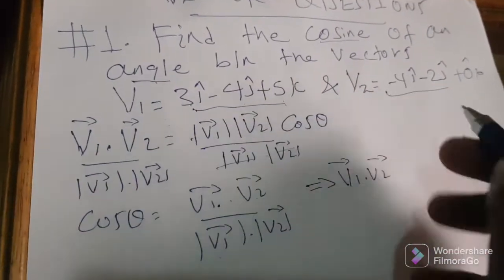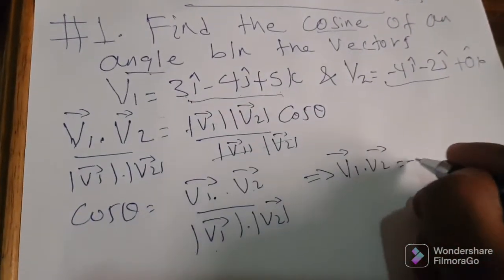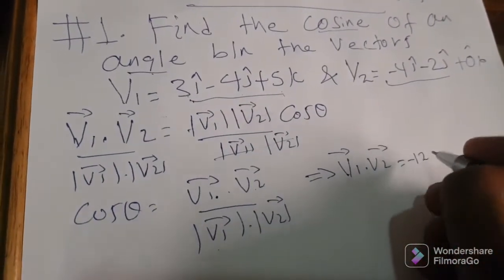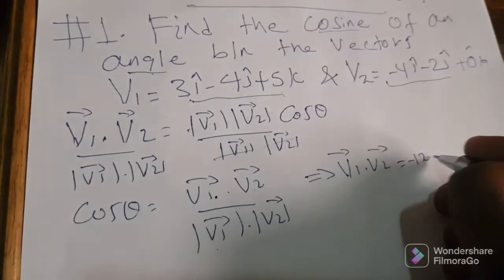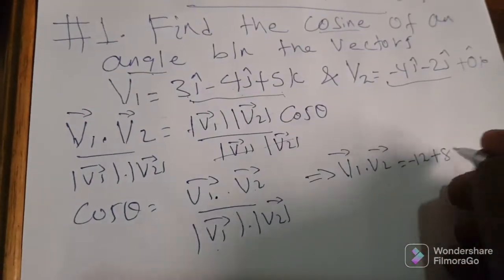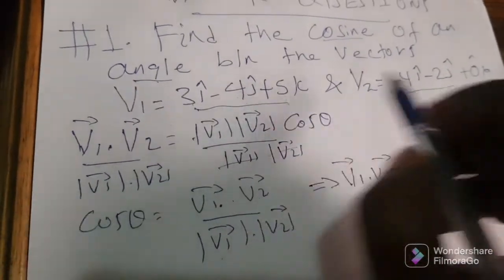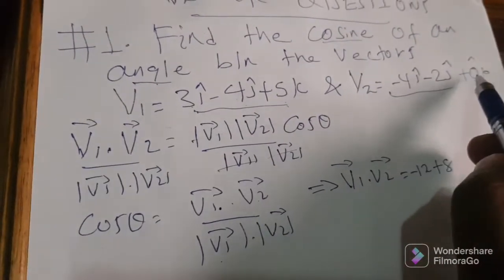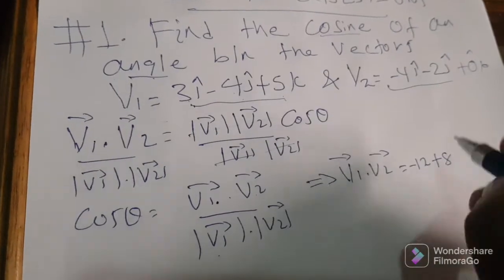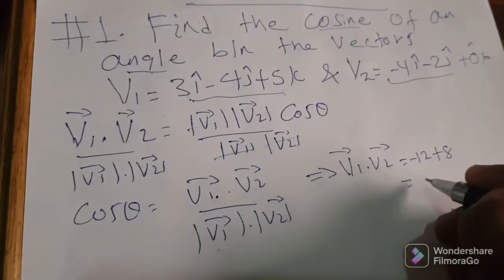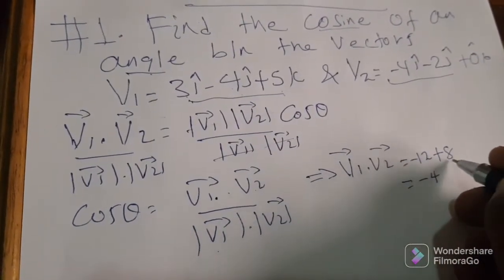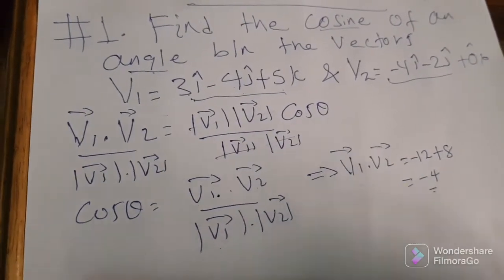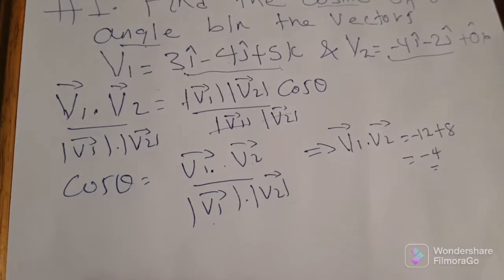Computing the dot product: 3 times negative 4 is negative 12. Negative 4 times negative 2 is plus 8. 5 times 0 is 0. So the dot product is negative 12 plus 8, which equals negative 4.